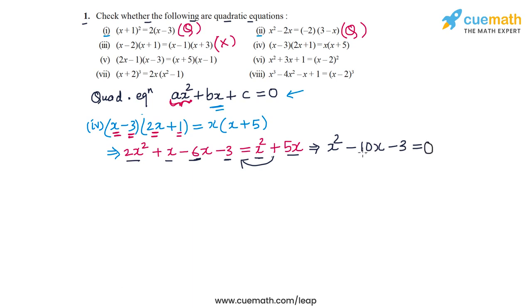So x² − 10x − 3 = 0, which is clearly a quadratic equation. The equation in Part 4 is a quadratic equation.